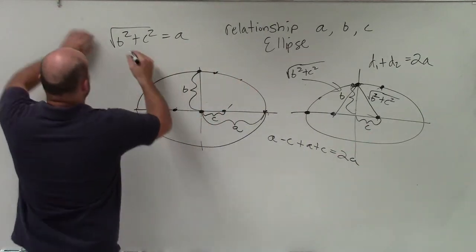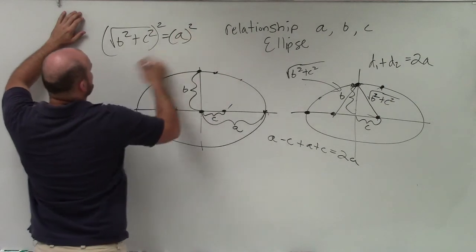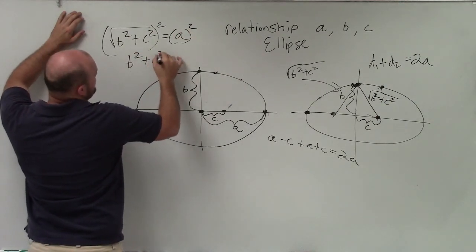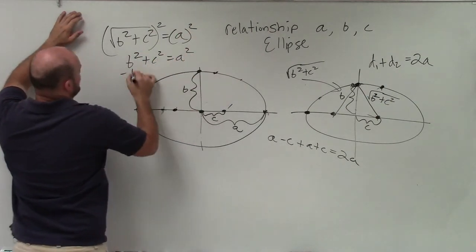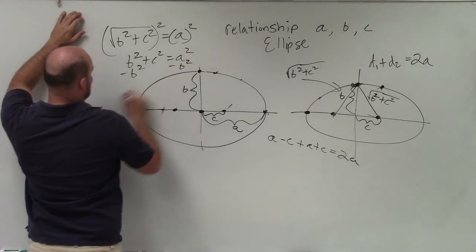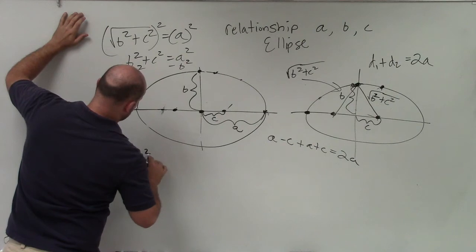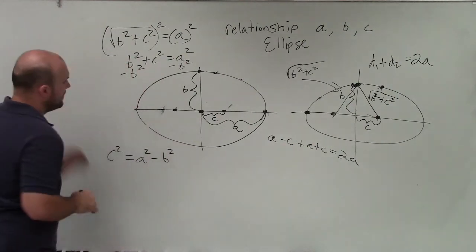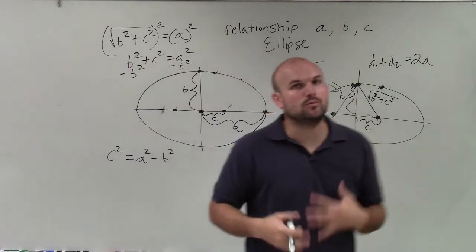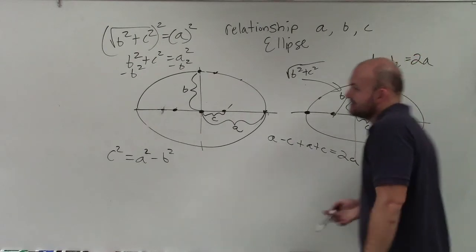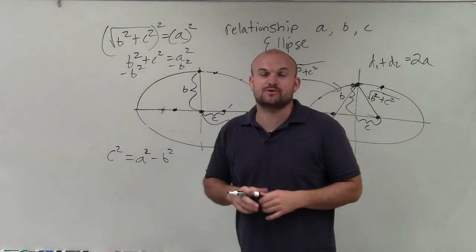So now, when I go ahead and solve for this, I square both sides, and I get b squared plus c squared is equal to a squared. Subtract b squared on both sides, and you get c squared is equal to a squared minus b squared. Therefore, now showing you why the relationship between a, b, and c is a squared minus b squared equals c squared.